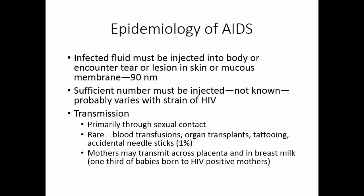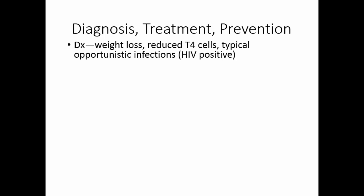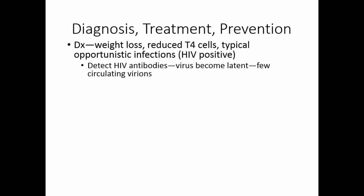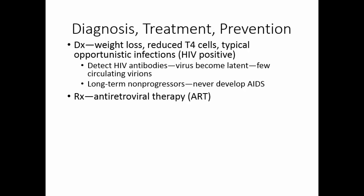About one-third of the babies born to HIV-positive mothers are themselves HIV positive. The diagnosis is usually seeing weight loss, the reduced T4 cell population, and the typical opportunistic infections in someone who is HIV positive. Because the virus becomes latent, we have to detect HIV antibodies — there are very few circulating virions. There is a small population called long-term non-progressors. They've had HIV for decades but have never developed AIDS. They don't know if they got a particularly weakened strain of HIV or if they have unusually strong immune systems. The treatment is antiretroviral therapy, or ART.